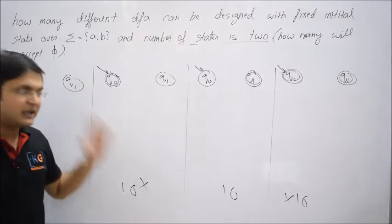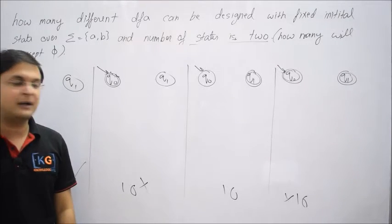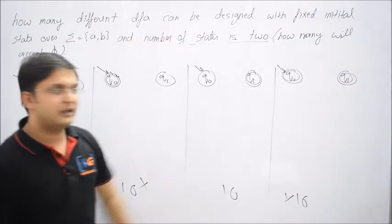And here because the initial state is final, then null is always being accepted so I cannot take any one of those 16 cases. Now let's go to the fourth case again.